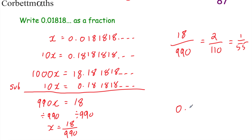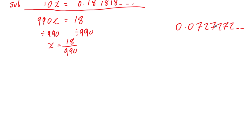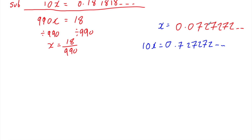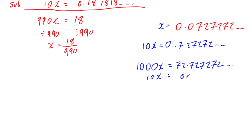Can you now try this one yourself? Please write 0.0727272... as a fraction. So we call this x: x equals 0.0727272... We want to multiply so we get the recurring bit after the decimal point. Multiplying by 10 gives 10x equals 0.727272... just moving all digits one column to the left. Going back to x, we want to move digits so we get 72.727272..., so we multiply by 1000. Therefore 1000x equals 72.727272...